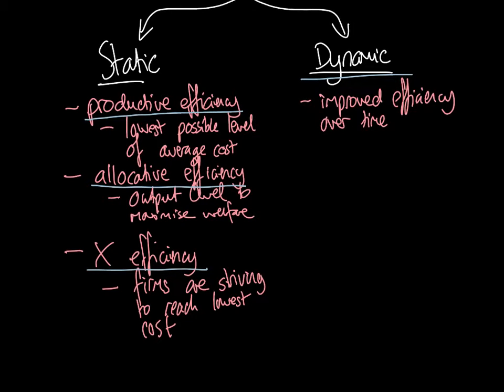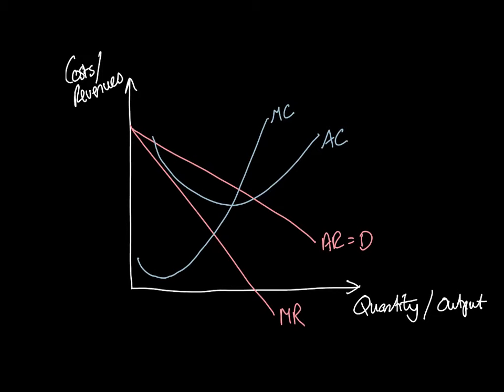In the rest of this video, we'll go through each of these and, importantly, look at how we would demonstrate each on a diagram of a firm. We'll start with the basic theory of the firm diagram — a firm in an imperfect market where there is a degree of supernormal profit. The way you draw the diagram does affect the efficiencies, but that will be covered in a separate video on how efficiencies differ across different markets.